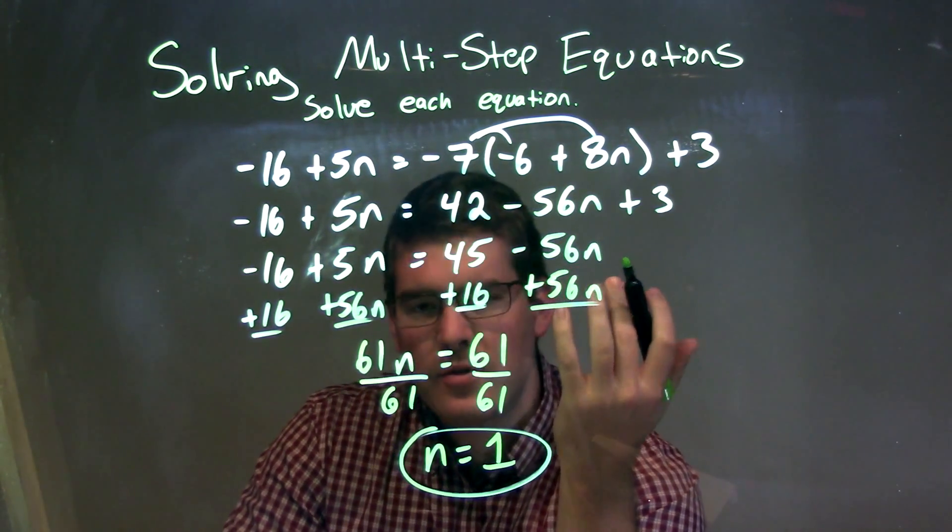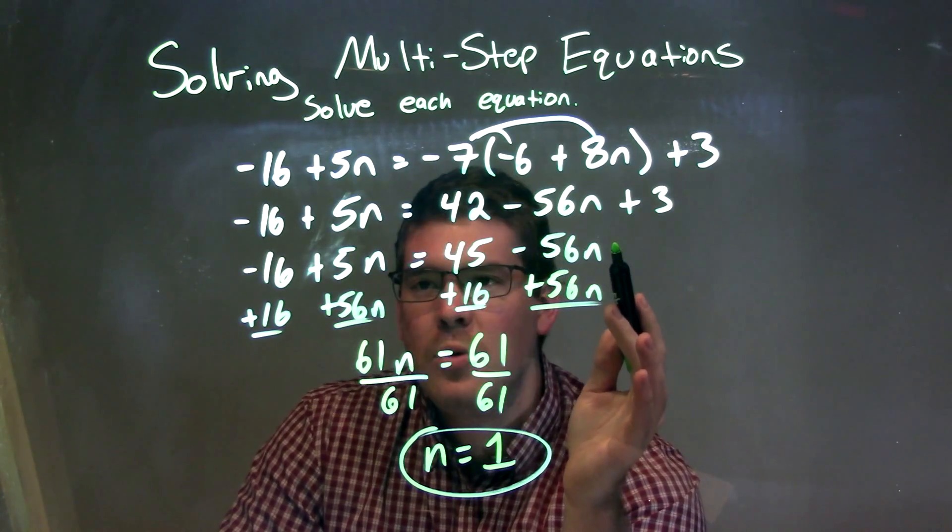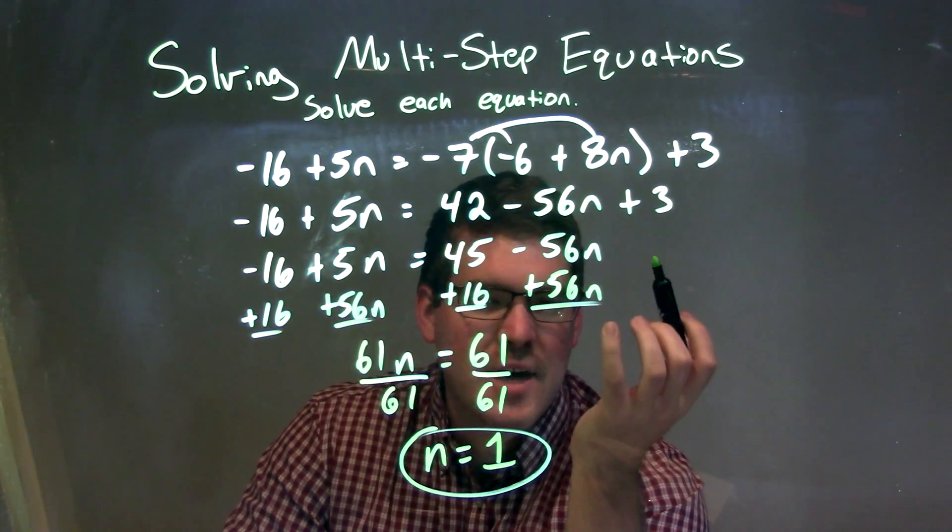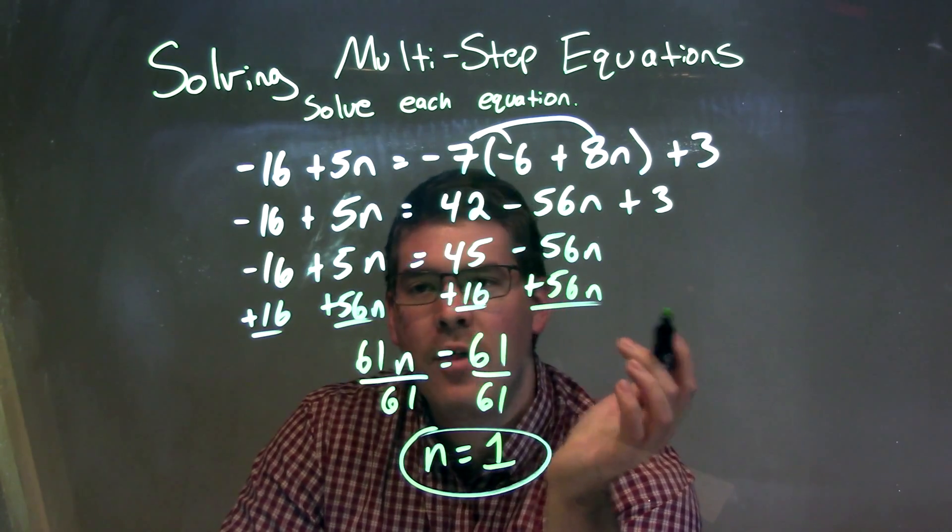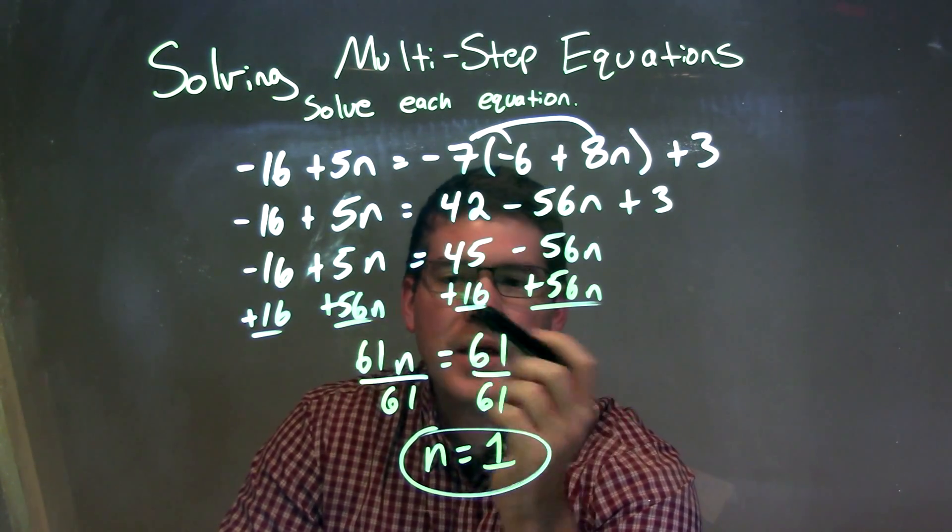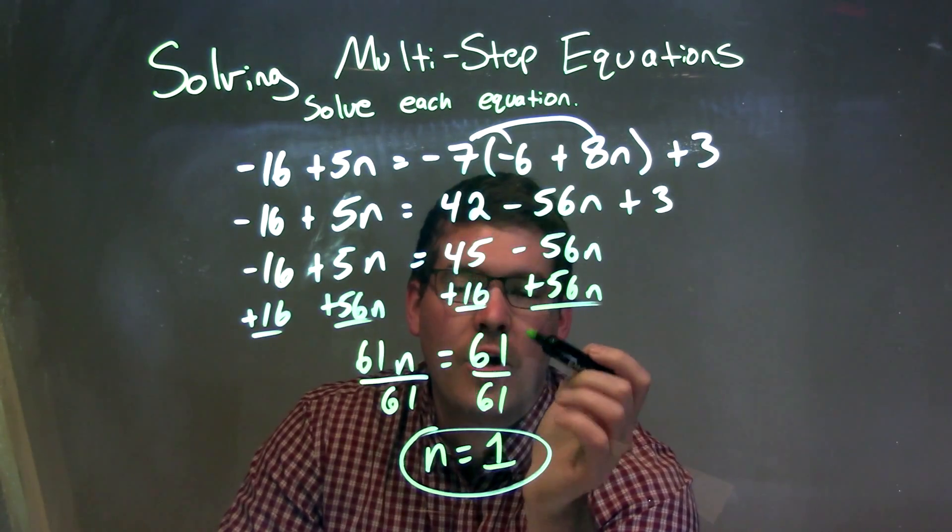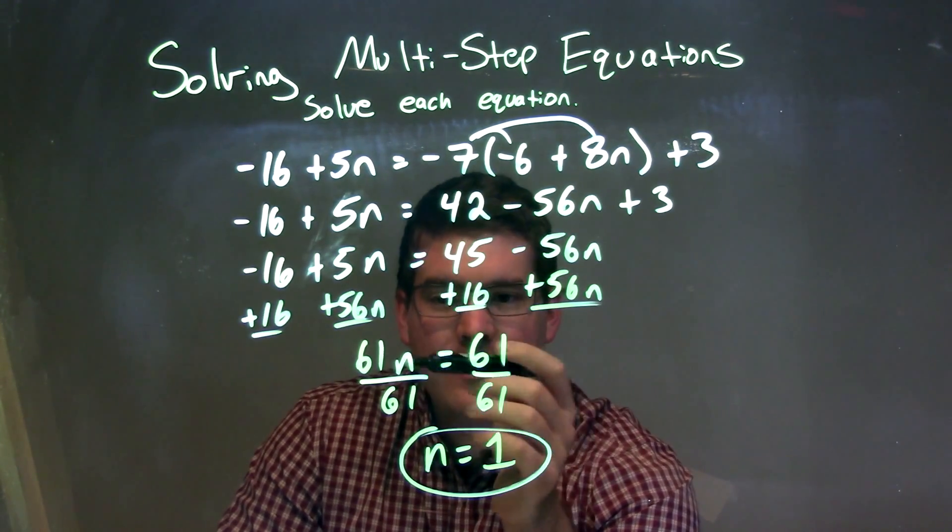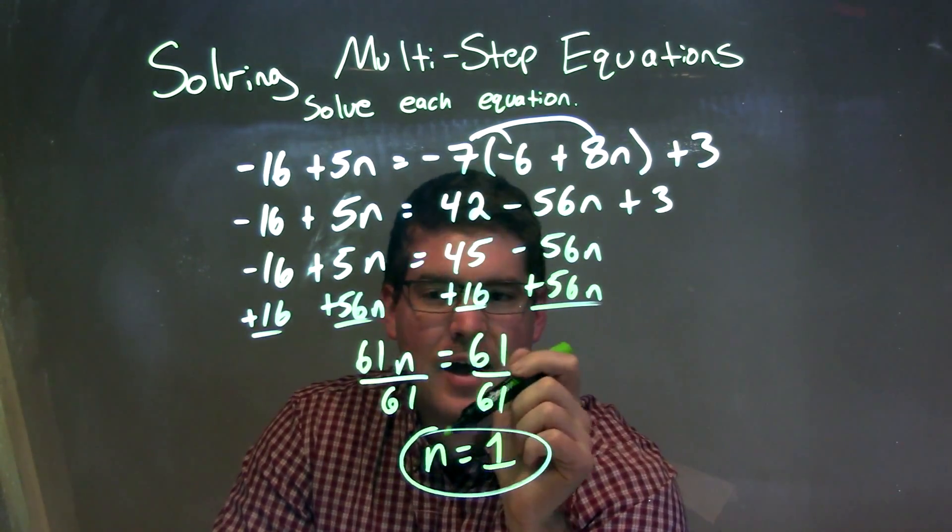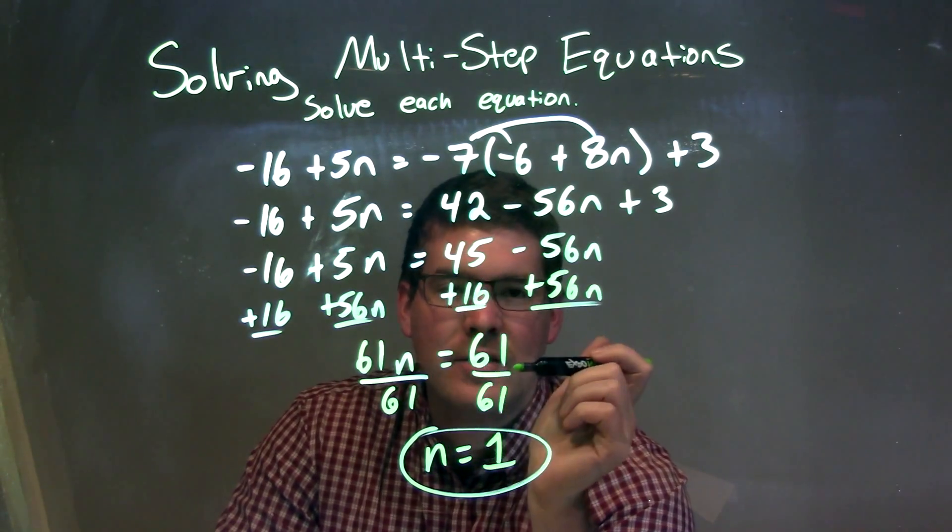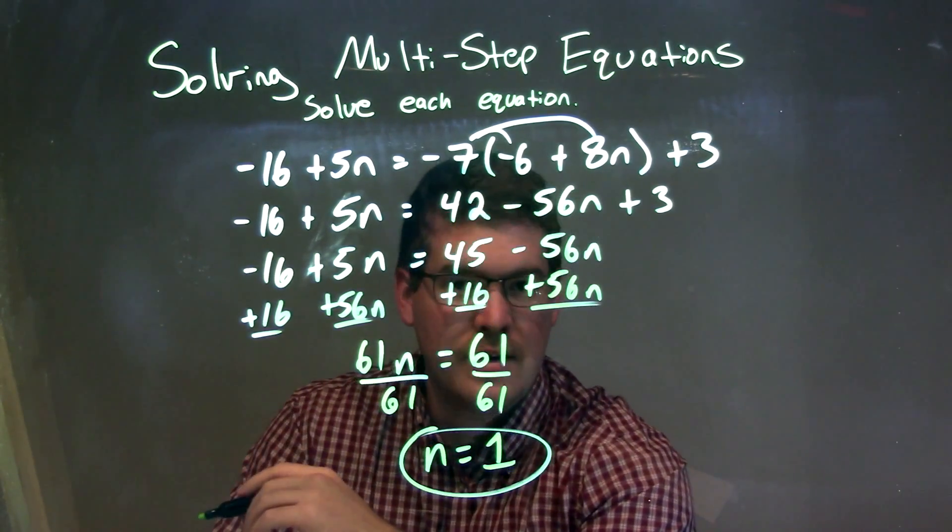At that point, both sides of the equal sign had no like terms on each side that I could combine, so I had to bring all the variables to the left and the numbers to the right. That gave me 61n on the left and positive 61 on the right. Then I got n by itself, divided by 61 on both sides, and got n equals 1, and that is our final answer.